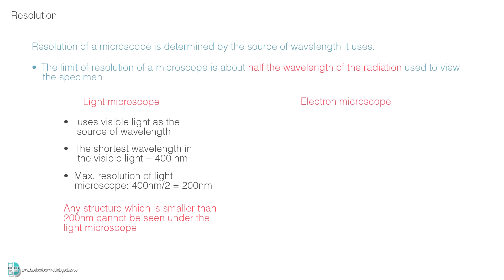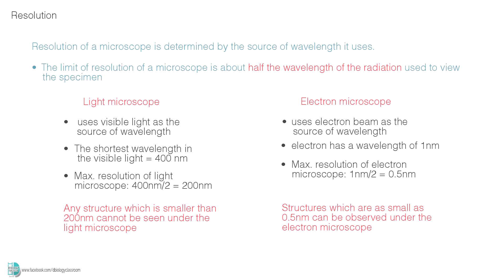The electron microscope uses electron beam as the source of radiation. The electron has a wavelength of 1 nm. So, the resolution of an electron microscope is 1 nm divided by 2, which is 0.5 nm. Structures which are as small as 0.5 nm can be observed under the electron microscope.